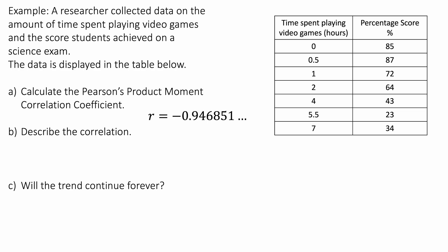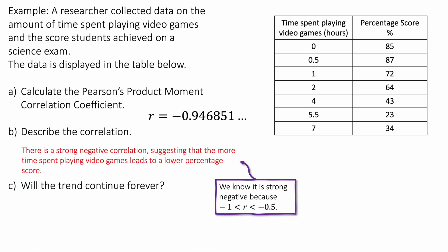Now we're going to describe the correlation. Here our value of r is very close to minus one, so we can say it's a strong negative correlation, suggesting that the more time spent playing video games leads to a lower percentage score. We know it's strong because the value of r is between minus 0.5 and minus one.